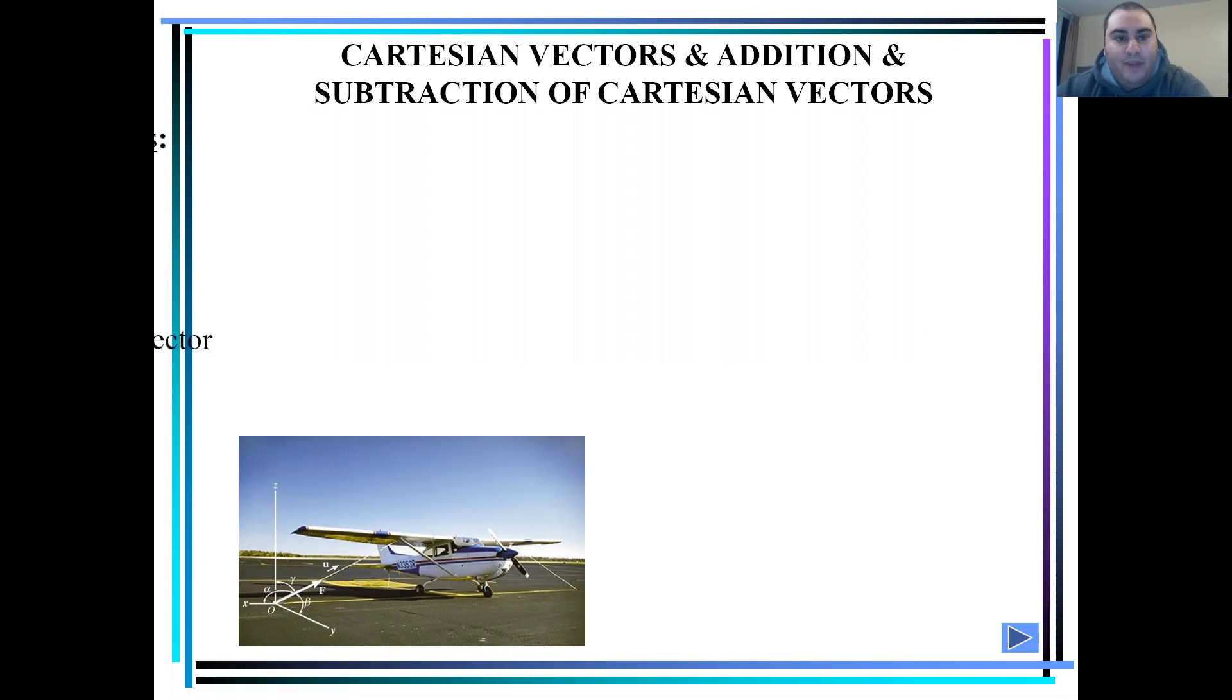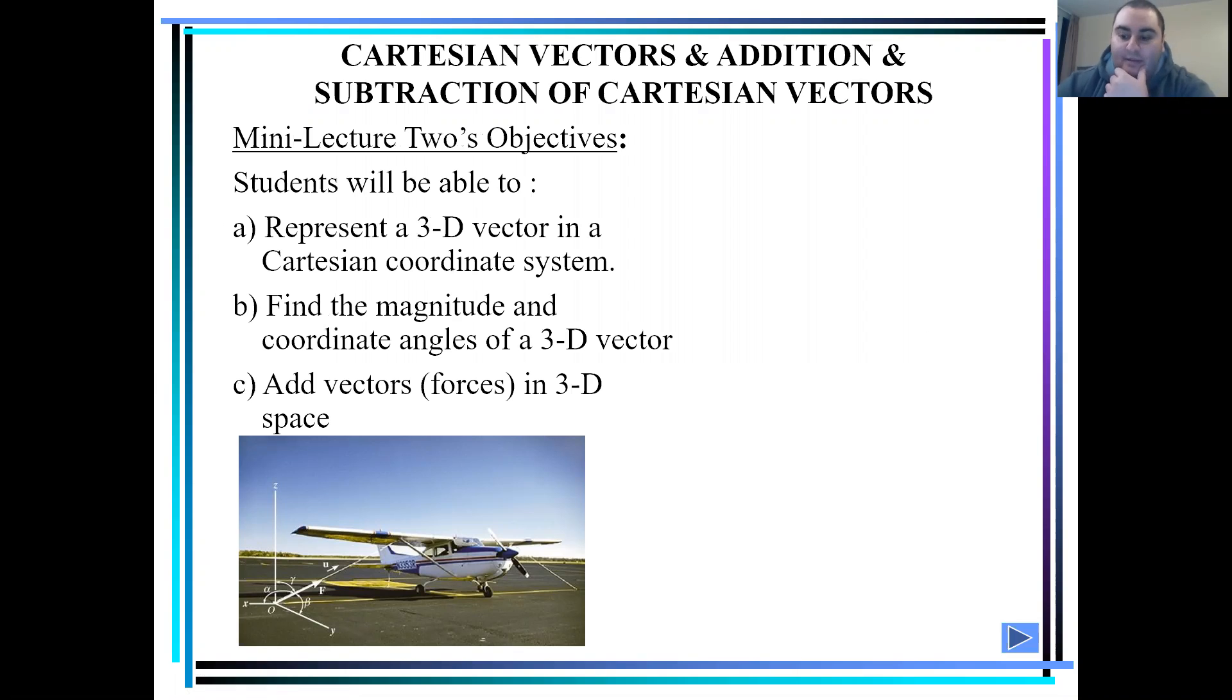So for our second mini lecture objectives, students will be able to represent a 3D vector in Cartesian coordinate system, find the magnitude and coordinate angles of a 3D vector, and add vectors and forces in 3D space.